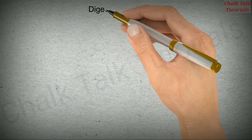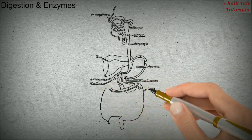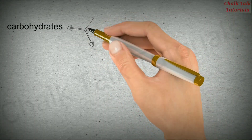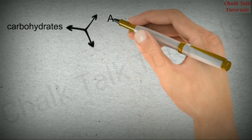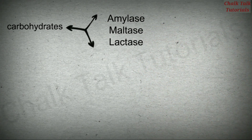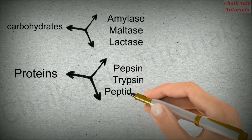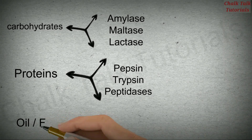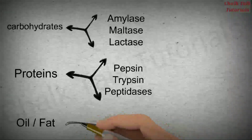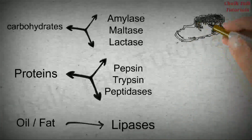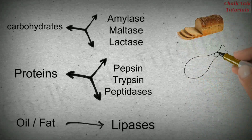Different types of food components require different enzymes for their breakdown and digestion. For example, carbohydrates require many enzymes such as amylase, maltase, and lactase, while proteins require different enzymes like pepsin, trypsin, and peptidases. Oils and fats also require their specific enzymes, for example lipases. Many of these enzymes may be present in an inactivated form and therefore require activation for proper functioning.